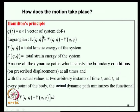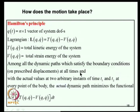For a system with N degrees of freedom, denoted by vector Q(t), we define the Lagrangian L as a function of Q and Q̇: L = T − V, where T is total kinetic energy and V is total potential energy. According to Hamilton's principle, among all dynamic paths satisfying boundary conditions and starting/ending with actual values at times T₁ and T₂, the actual path minimizes the action integral ∫(T₁ to T₂) (T − V) dt.